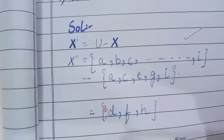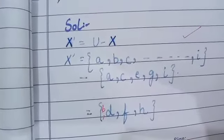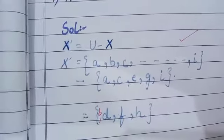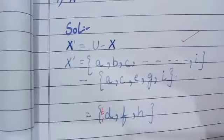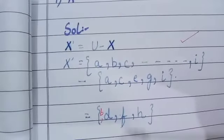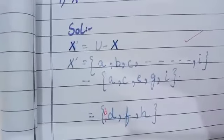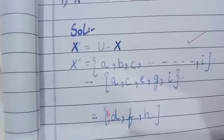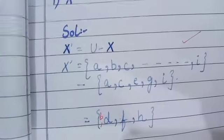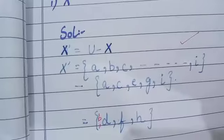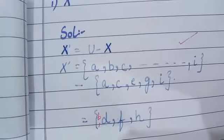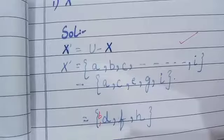Here the universal set is alphabets a, b, c till i, while X is {a, c, e, g, i}. In the difference, you have to subtract or eliminate all the elements that are present in set X. So by cutting the elements that are part of both sets, we get the answer: {b, d, f, h}.